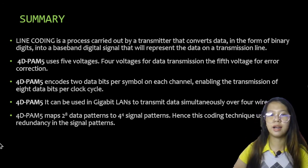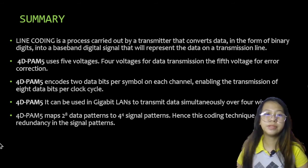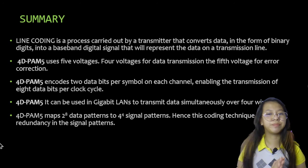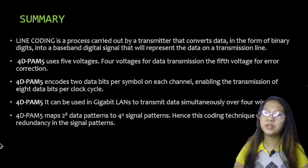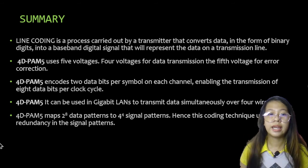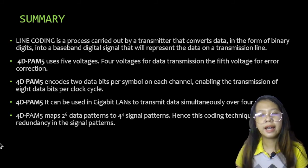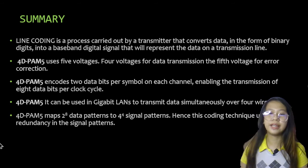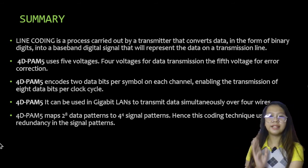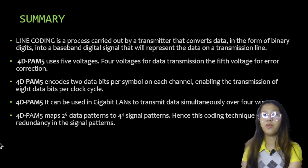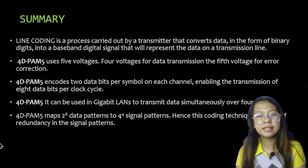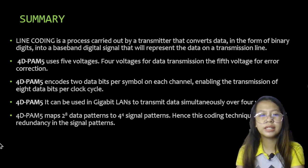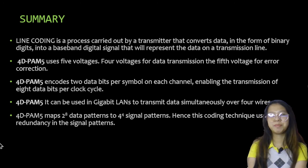In summary: Line coding is a process carried out by a transmitter that converts data in the form of binary digits into a baseband digital signal that represents the data on a transmission line. 4D-PAM5 uses five voltages — four for data transmission and the fifth for error correction. It encodes two data bits per symbol on each channel, enabling transmission of eight data bits per clock cycle. It can be used in Gigabit LANs to transfer data simultaneously over four wires. It maps 2 to the power of 8 data patterns to 4 to the power of 4 signal patterns, and thus uses a lot of redundancy in signal patterns.